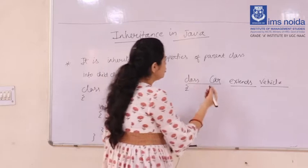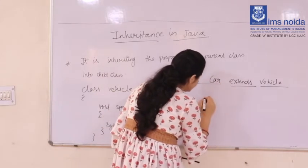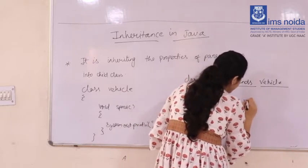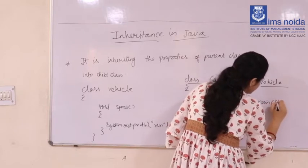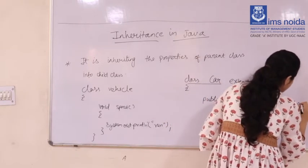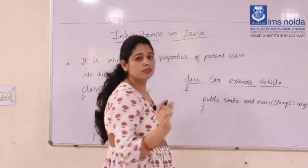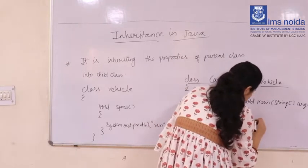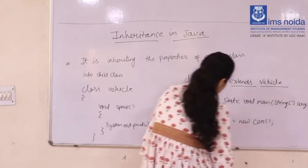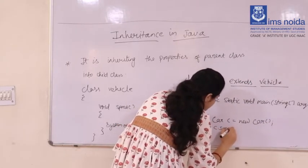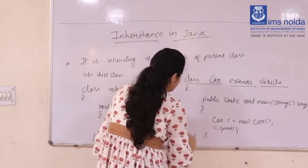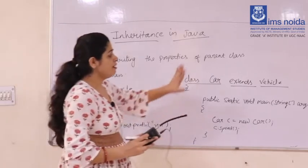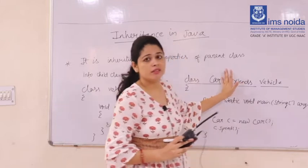Now I write public static void main(String[] args) and I simply create an object: Car c = new Car(); and then call c.speed().